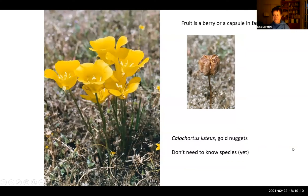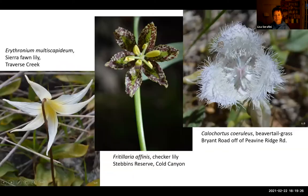Now let's talk about the fruits. Fruits are berries or capsules. Here's a nice capsule for this gold nugget — here are the flowers, and you can see it's starting to open up to release the seeds. I hope you enjoyed this introduction to the lily family. We will be learning genera and species a little bit later, but pictures help give a sense of the family's characteristics.